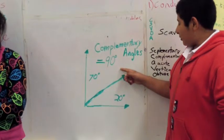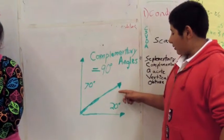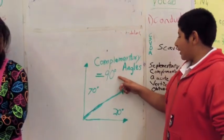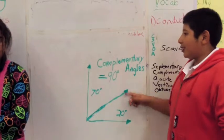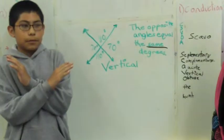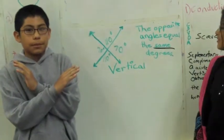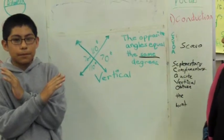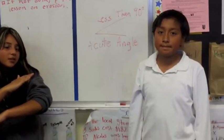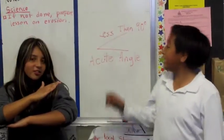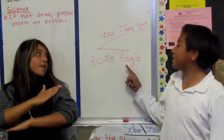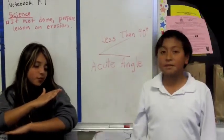Two complementary angles are together and they make 90 degrees. She's showing you how to do it. An acute angle is an angle less than 90 degrees, as she is showing.